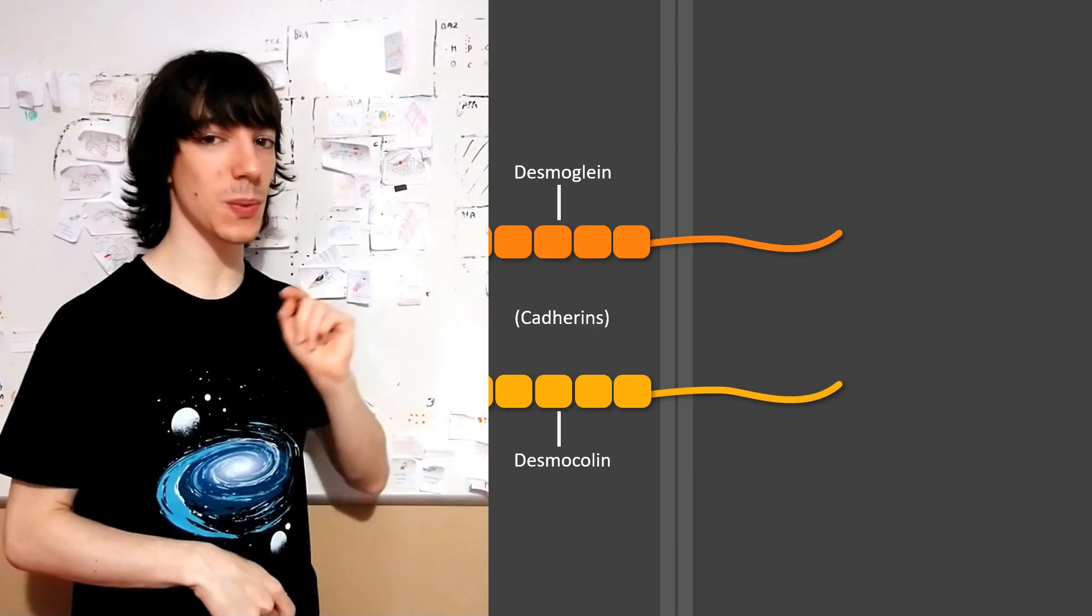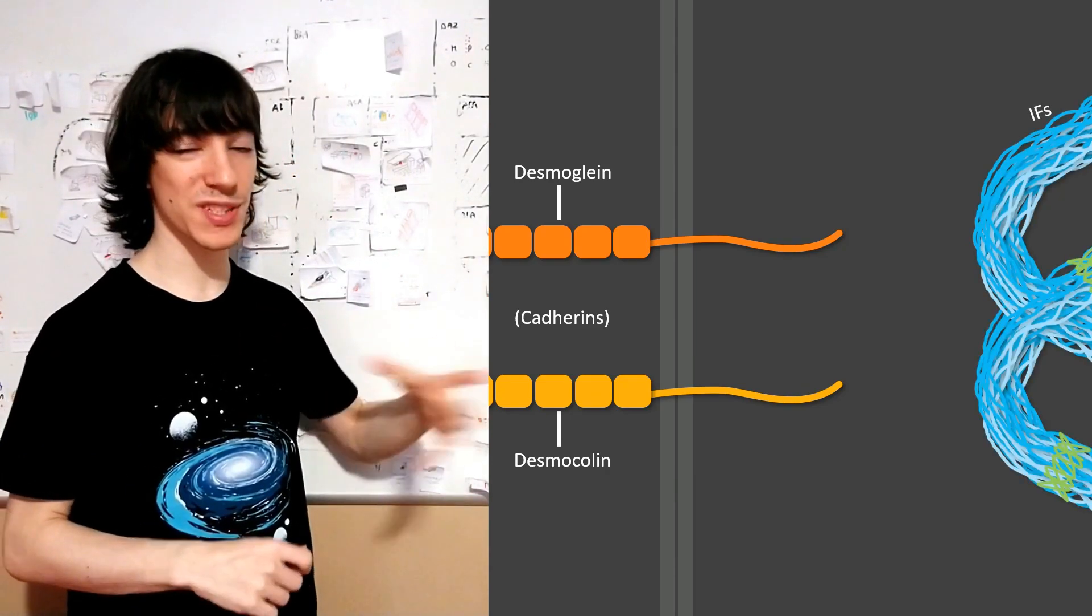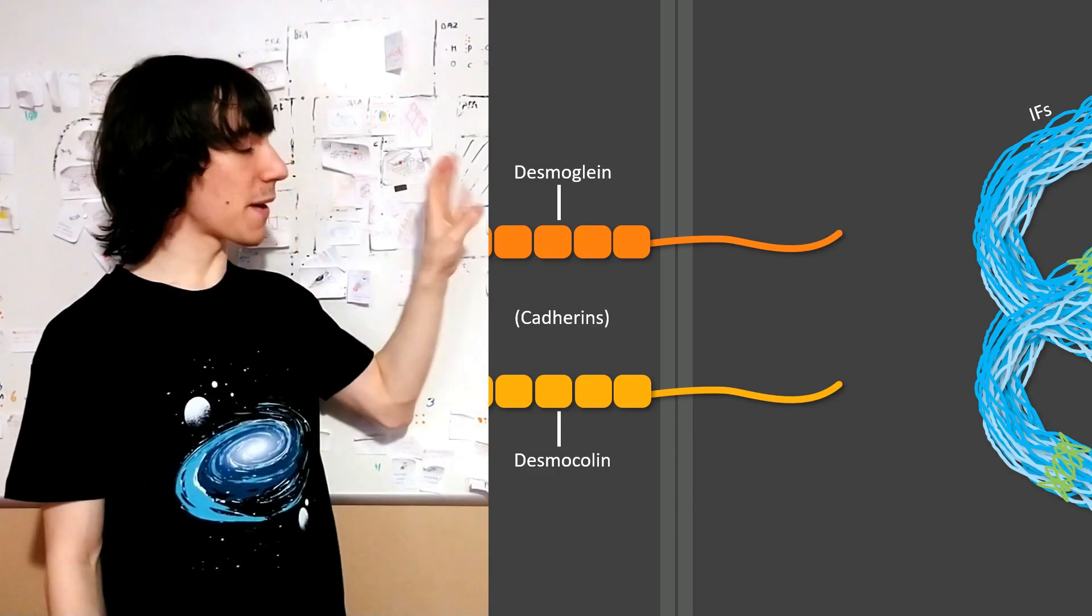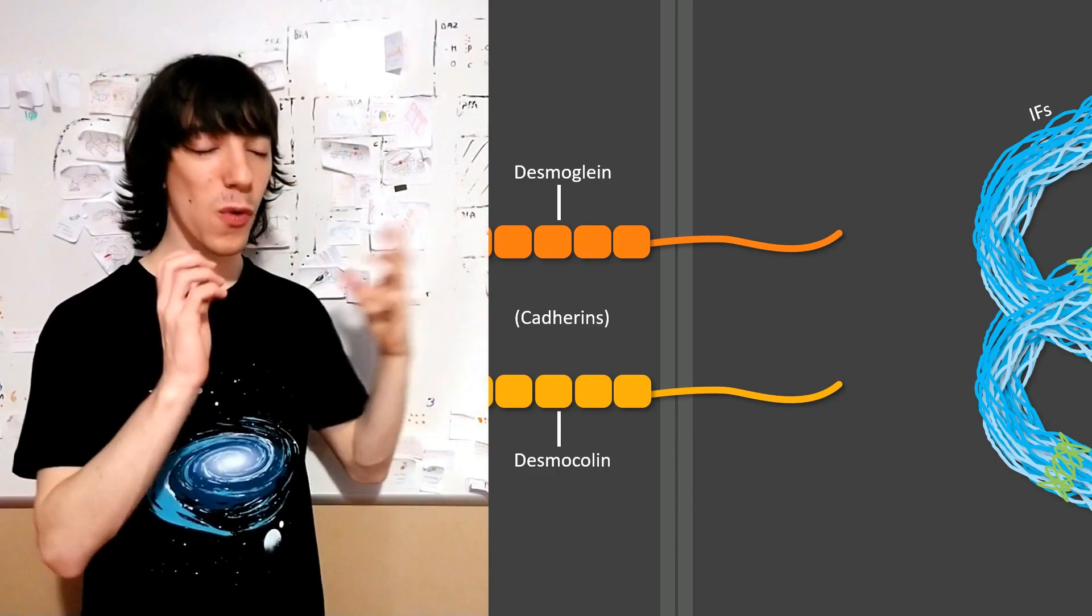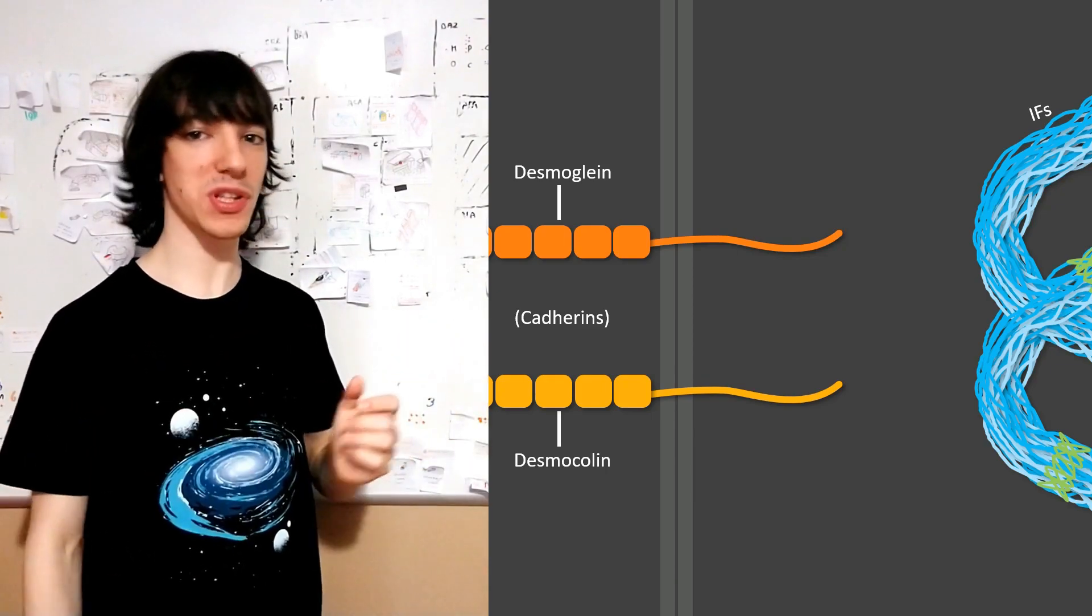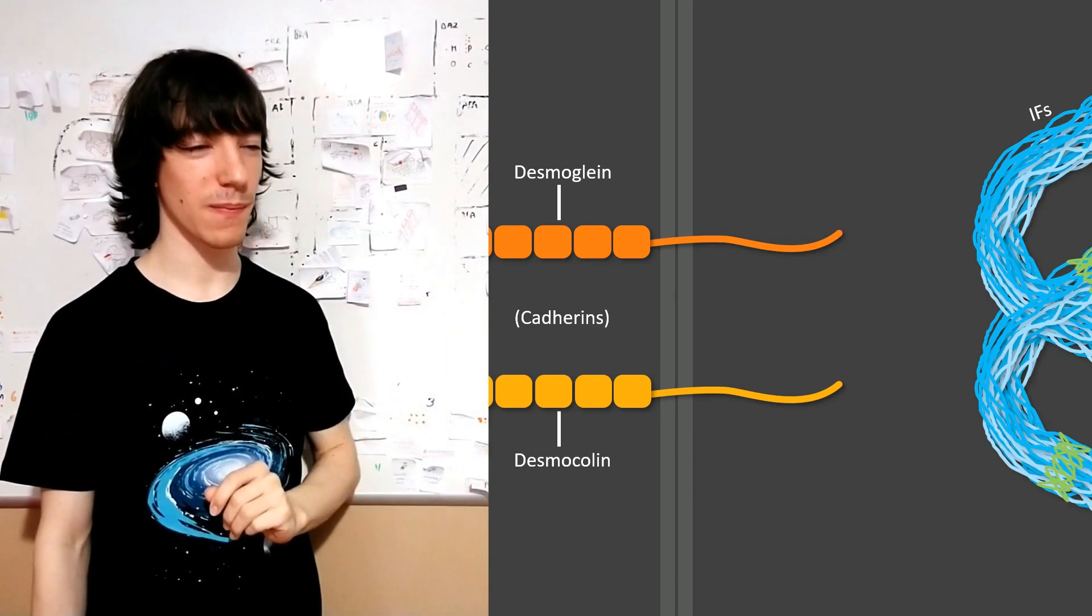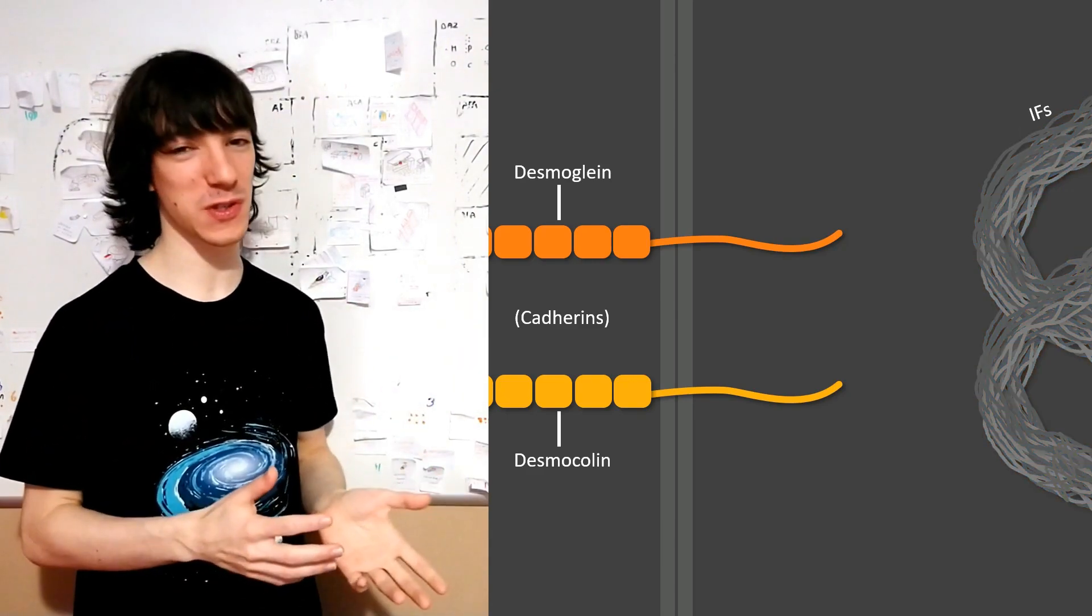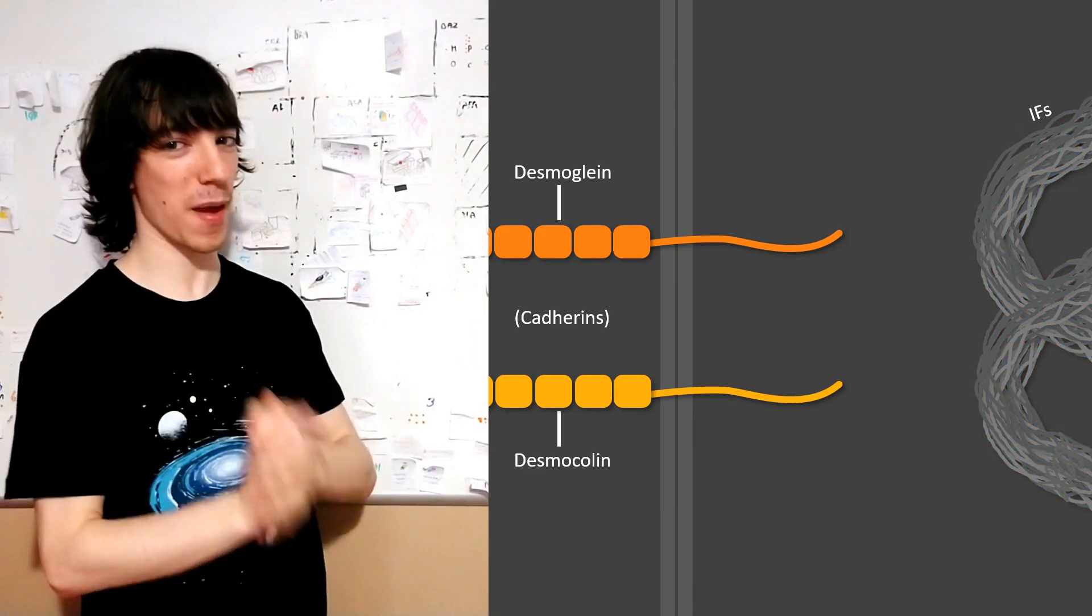As we said, these cadherins interact with intermediate filaments, which I'm going to abbreviate as IFs. These can be keratins, vimentins, or other kinds of fibrillar proteins depending on the cell type. But they don't do it directly, as you're probably used to by now. They need adapters.